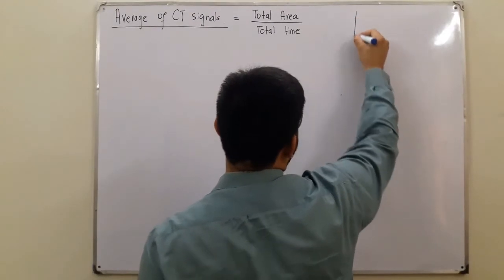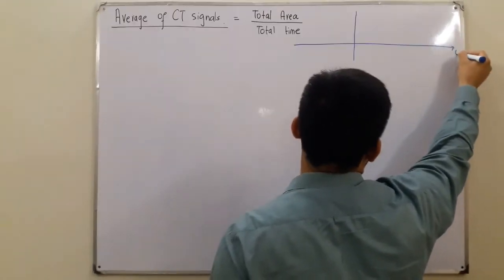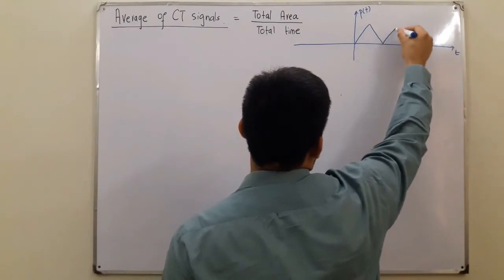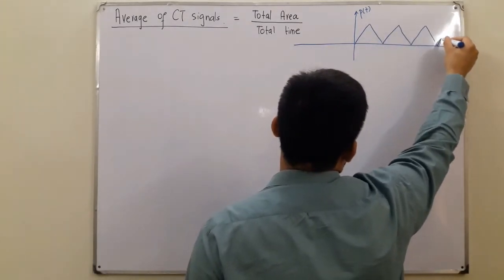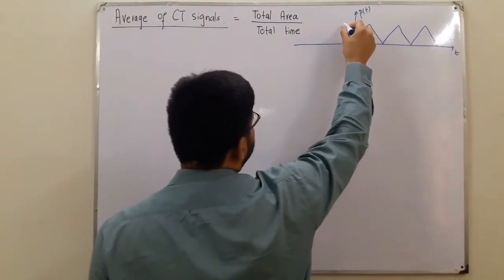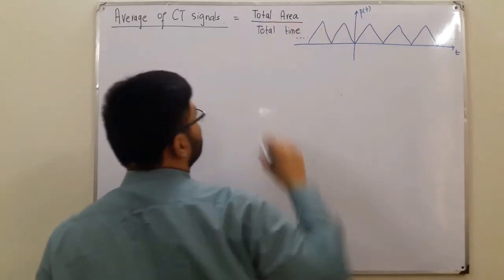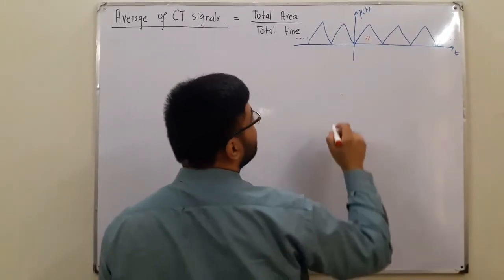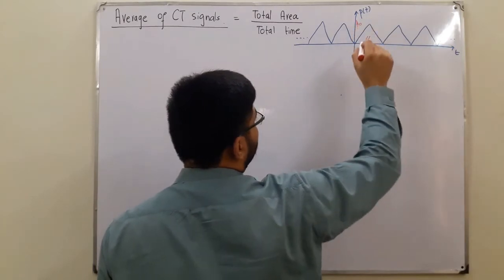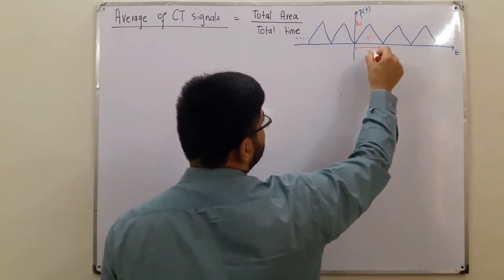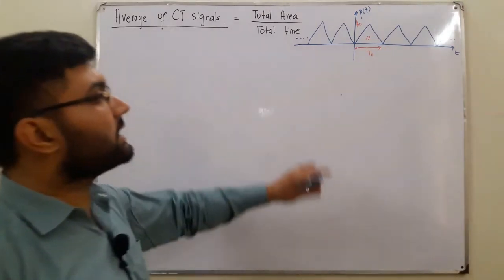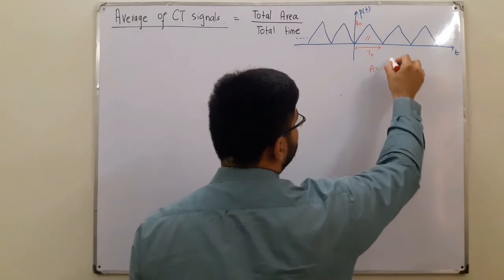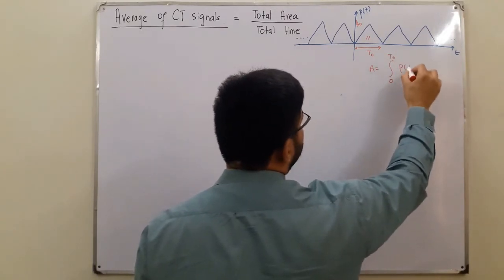Let's take an example. I have a periodic signal p(t) on the time axis — a triangular wave that repeats to the left and right of the origin. Let's say the amplitude is a₀ and the fundamental time period is t₀. To calculate the area of this triangle over one period, we integrate p(t) from 0 to t₀.